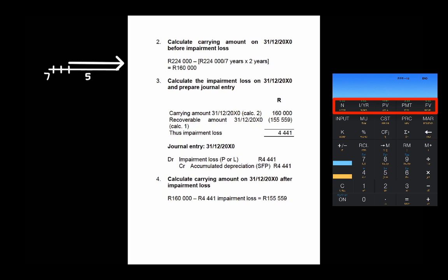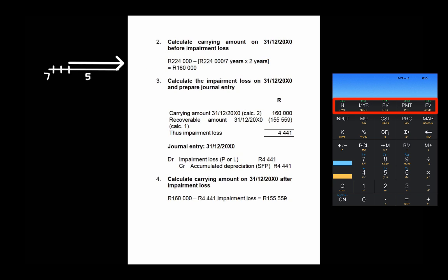Once you have your recoverable amount, you need to calculate the carrying amount in your accounting records to compare with it. The calculation is the cost of 224,000 divided by the total useful life of 7 years, multiplied by the 2 years elapsed to the end of the current reporting period — remembering that impairment is tested at the end of that period. This gives a carrying amount of 160,000 Rand, which compared to the recoverable amount of 155,559 Rand allows you to calculate the impairment loss.